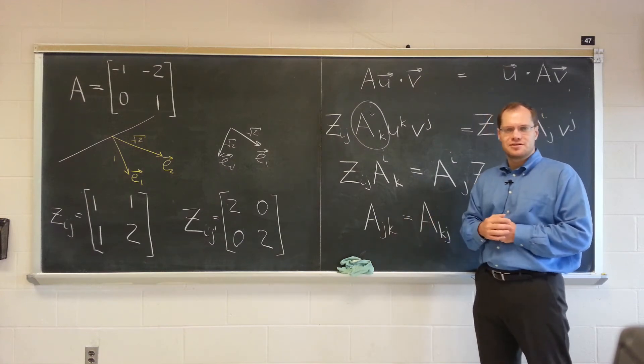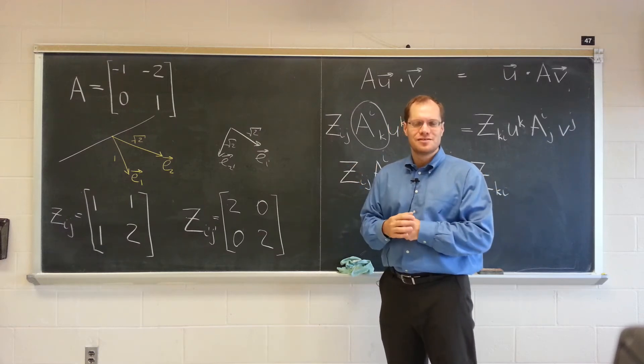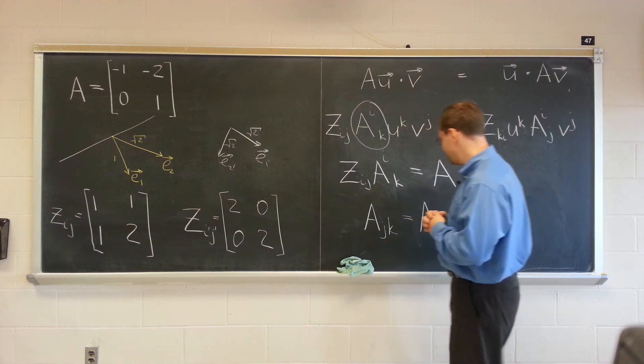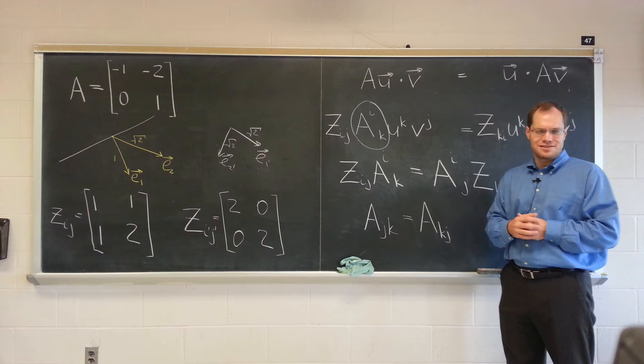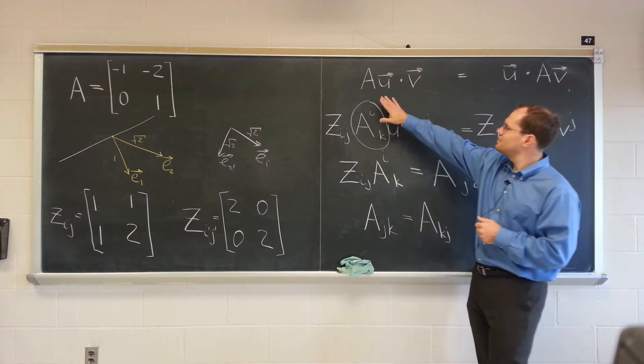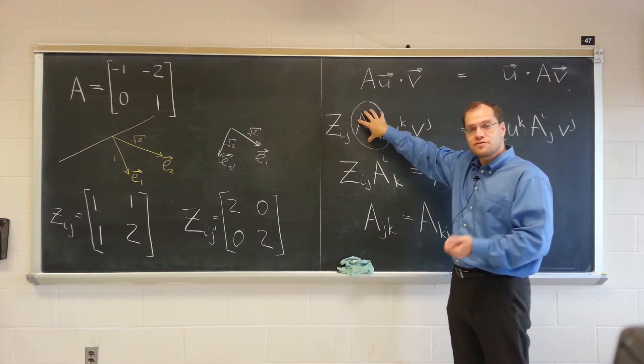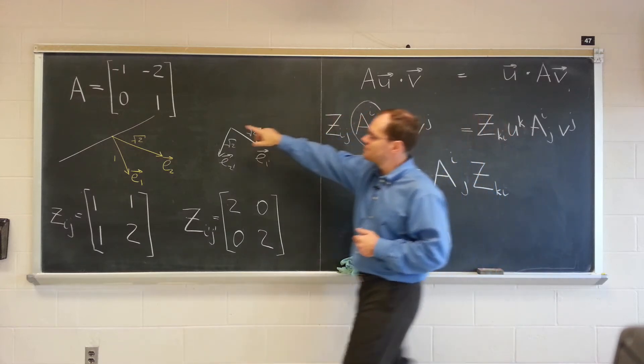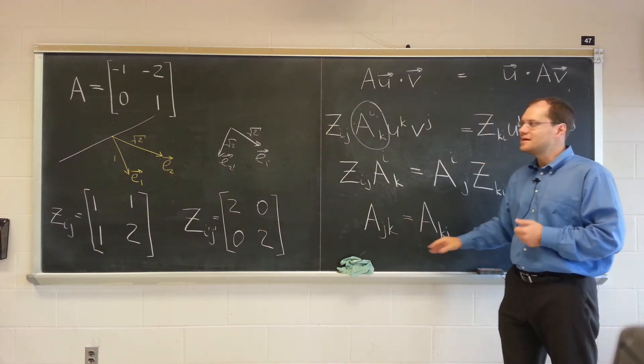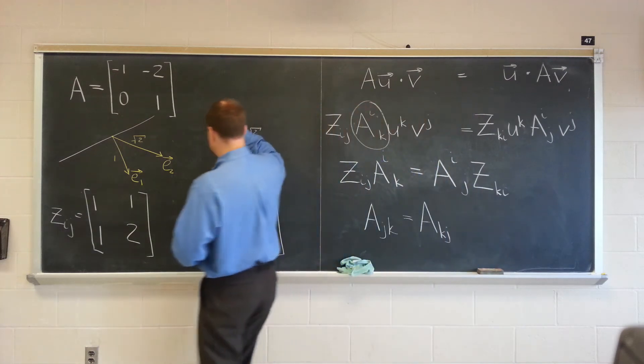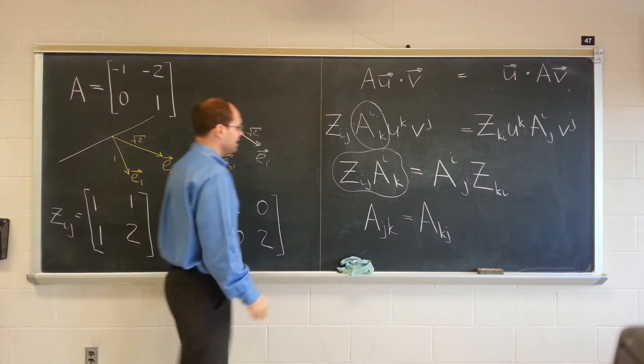But what this is saying is that with the index lowered, the matrix is symmetric. So linear algebra actually kind of needs index juggling. Some of the statements would be cleaner with index juggling. So with the index lowered, the matrix is symmetric. So there is no claim that the matrix representing the linear transformation is symmetric for self-adjoint transformations. It itself is not symmetric.